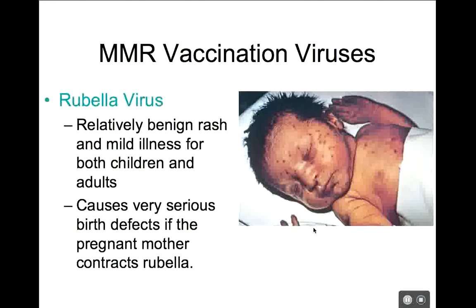Rubella is not really that serious — a relatively benign rash and mild illness for kids or adults. The problem is if a pregnant woman gets infected by rubella, it causes very serious birth defects. If mom becomes infected in the first trimester, that generally causes a miscarriage. If mom becomes infected in the second or third trimester, we're talking about serious mental, physical, or developmental defects in the baby.